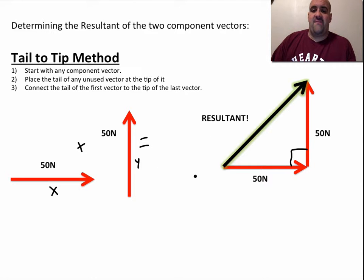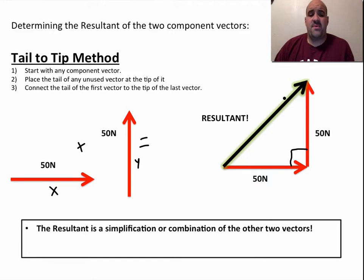The idea is, if this was a box, the net direction of force would be off in this direction. The resultant is really a simplification or a combination of the other two vectors. It gives us the magnitude and direction of the net force or the net speed or velocity or whatever vector quantity you are working with at the time.